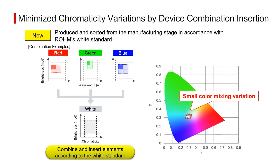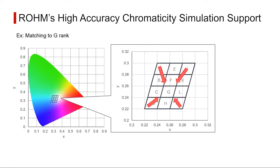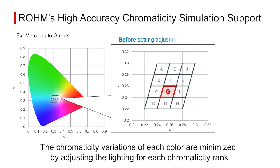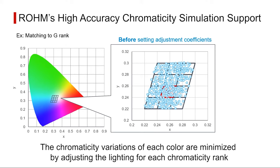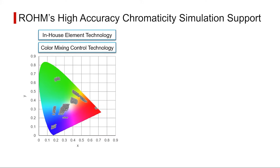To further refine the chromaticity rank, Rome provides support for calculating the chromaticity adjustment coefficients for each rank. Setting the current based on these adjustment coefficients allows for more detailed color matching.